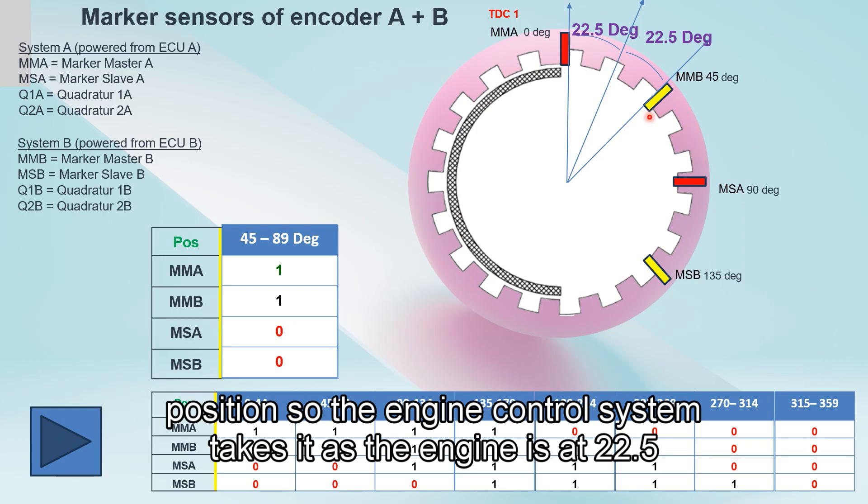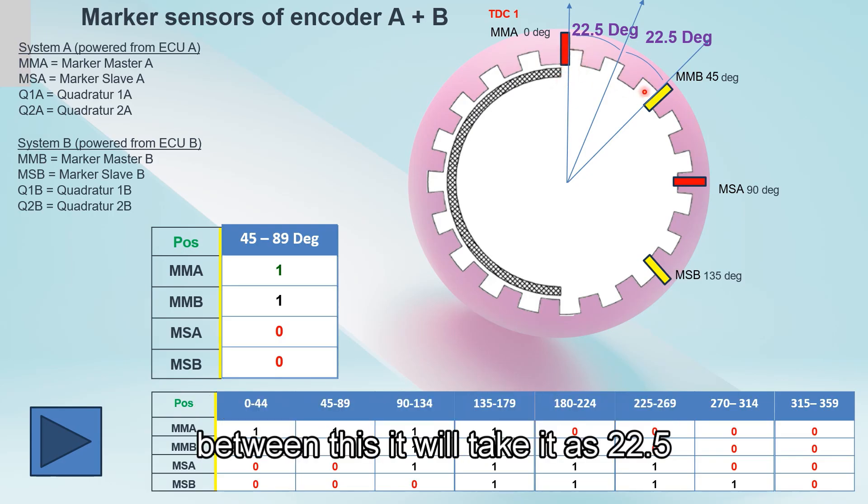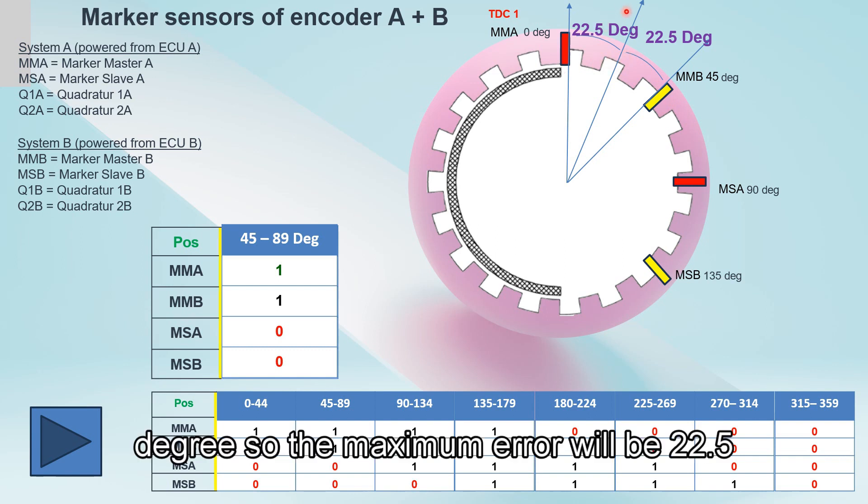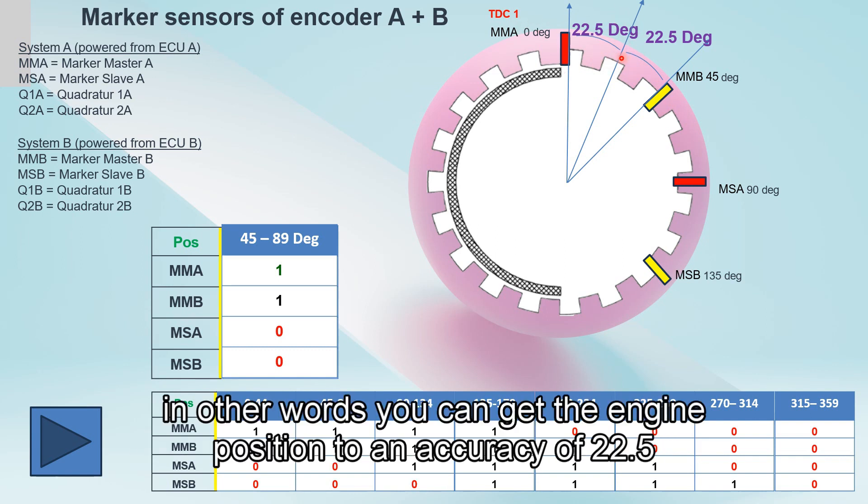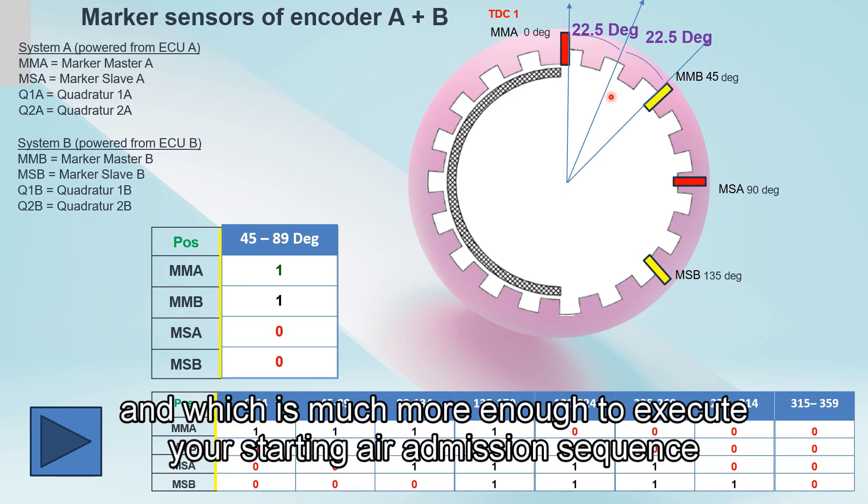So the engine control system takes it as the engine is at 22.5 degrees, regardless that its actual position is 1 degree or 44 degrees. The maximum error will be 22.5 degrees. In other words, you can get the engine position to accuracy of 22.5 degrees, which is much more than enough to execute your starting admission sequence.